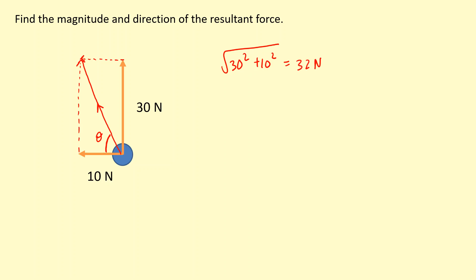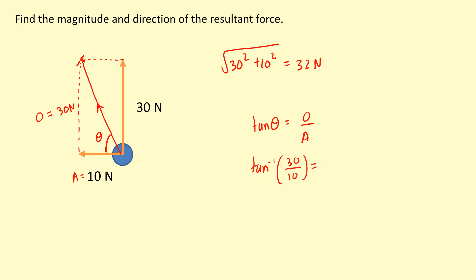That's the size of the resultant force. For the angle, we have 30 newtons on one side and 10 newtons on the other. Because 30 newtons is the opposite side of angle theta and 10 newtons is adjacent, the trigonometric function with opposite and adjacent is tan. So tan inverse of opposite over adjacent — 30 over 10 — gives us 72 degrees, which you can say is 70 degrees above the horizontal, or 70 degrees clockwise from the 10 newton force.